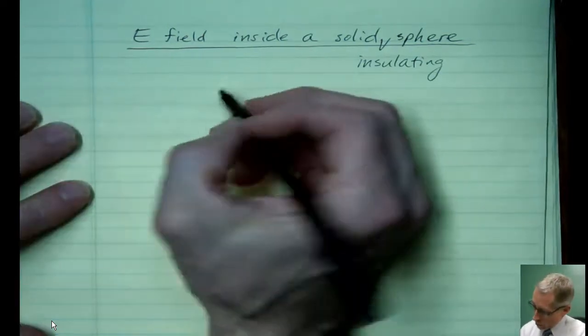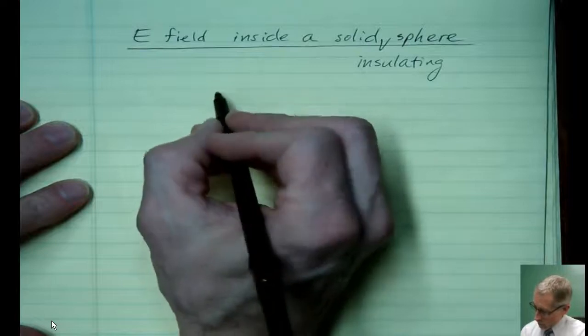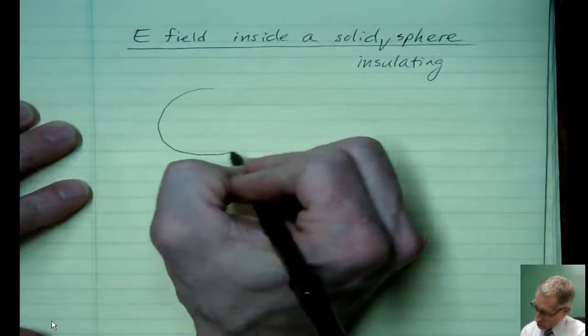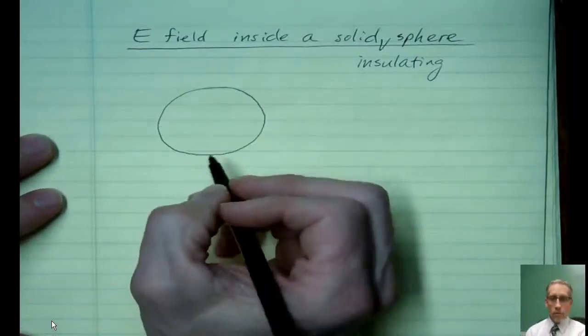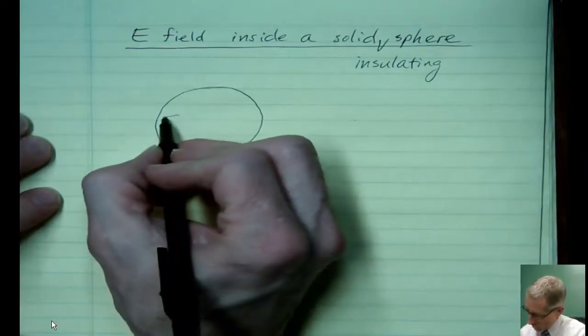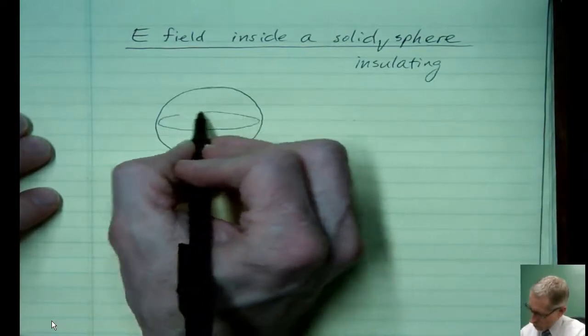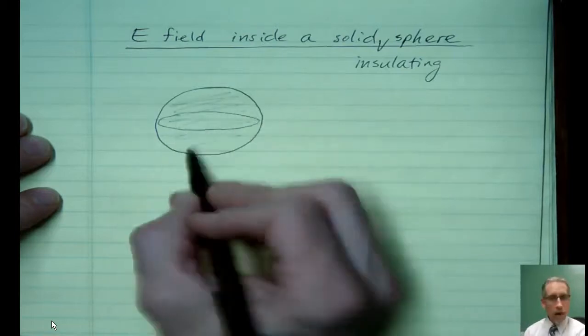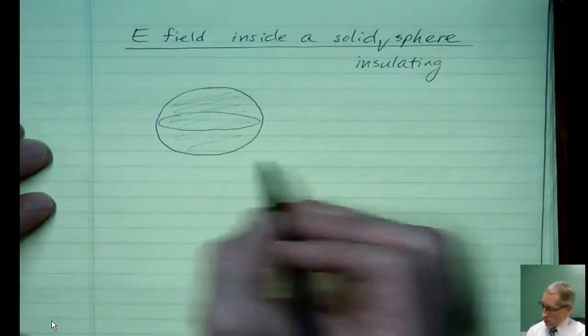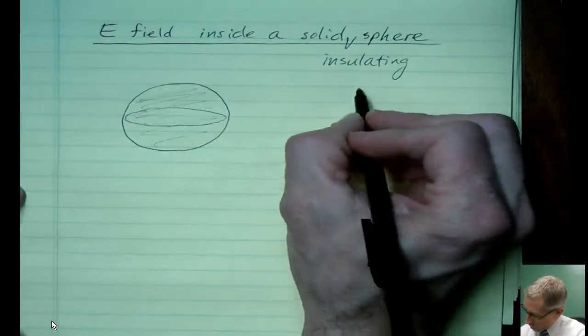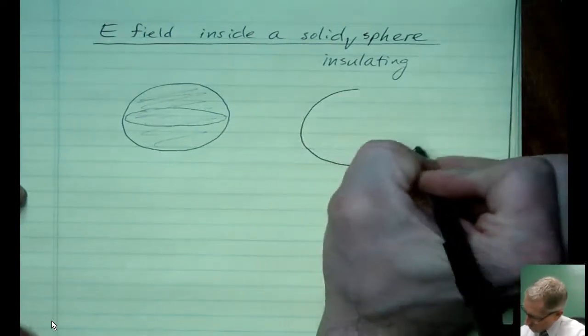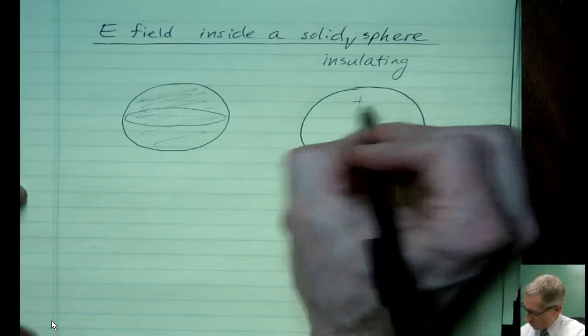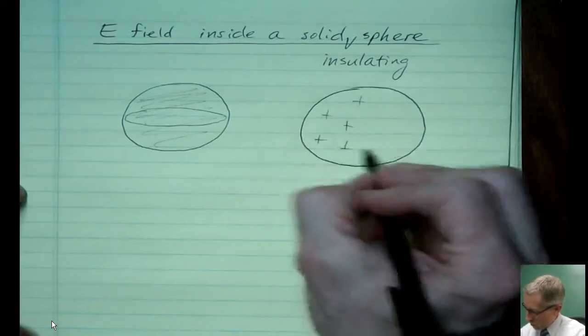So another great example of using Gauss's law. I'm going to draw a cross-section here of the sphere. Actually, let me show you what I would try to do if I could draw more three-dimensional. It would be like filling the entire volume of that thing with charge. But it's a lot easier to take a slice, and then we'll just put the charges uniformly distributed.